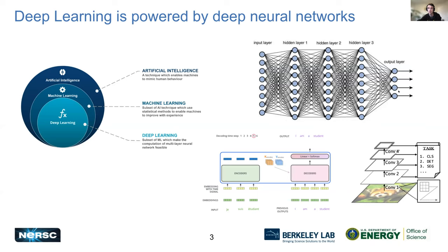This diagram on top is a basic vanilla neural network, but with all the research and exciting applications we've seen in deep learning, there are all sorts of different neural network architectures now designed specifically to process things like text data or image data. And these are being adapted even further in scientific domains.